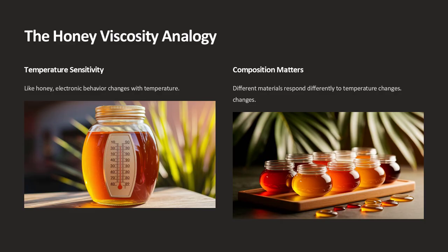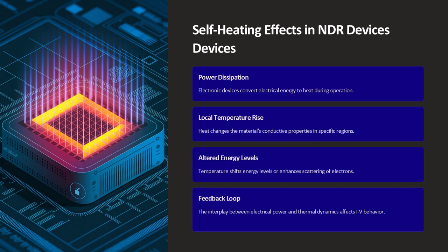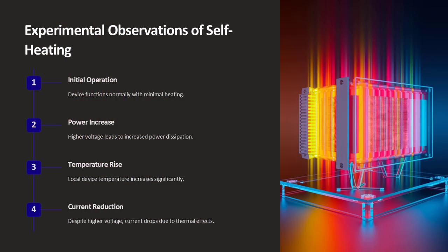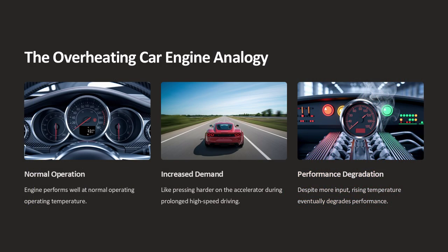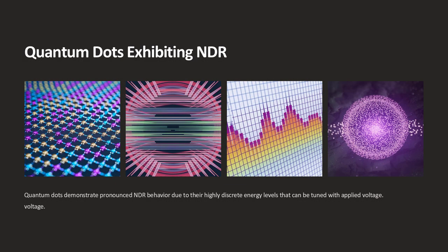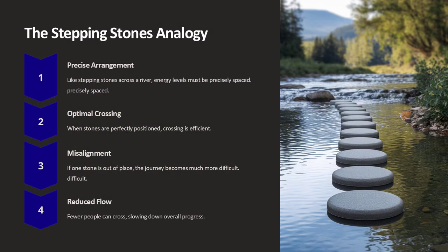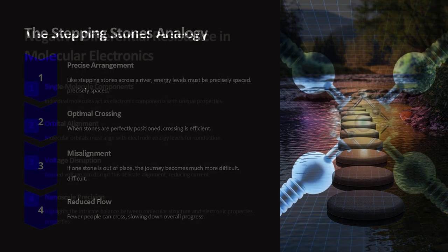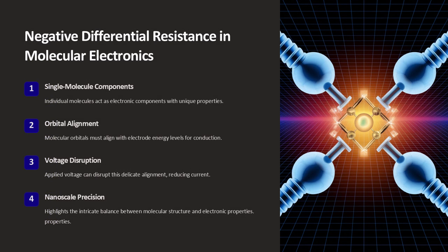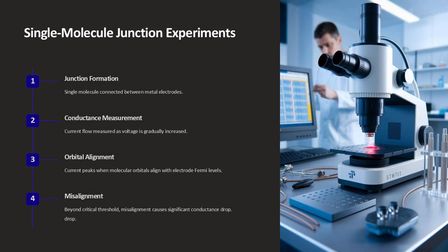The phenomenon of NDR is often explored in research experiments involving semiconductor devices like tunnel diodes and Gunn diodes. In a tunnel diode, electrons can tunnel through a very thin barrier between two layers of semiconductor material. This quantum mechanical effect creates a unique current-voltage IV characteristic. The current increases with voltage up to a peak point, but then as the voltage continues to rise, the current decreases, creating a region of negative differential resistance.